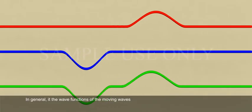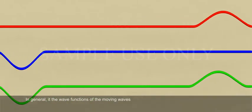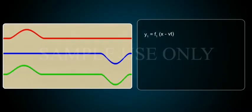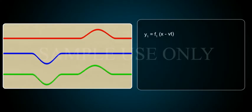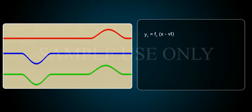if Y_n are the wave functions of the moving waves: Y1 = f1(x - vt), Y2 = f2(x - vt), and so on.